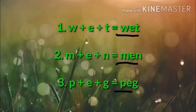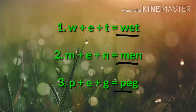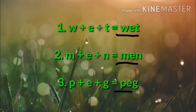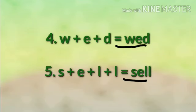Now, we will learn and do join the letters. Students, as you can see, on the left-hand side, different letters are written by joining them with a plus sign. And on the right-hand side, we have joined these letters to make a word. So, let's start this exercise. Number 1: W plus A plus T equals Wet. Number 2: M plus A plus N equals Men. Number 3: P plus A plus G equals Peg. Number 4: W plus A plus D equals Wed. Number 5: S plus A plus L plus L equals Sell.